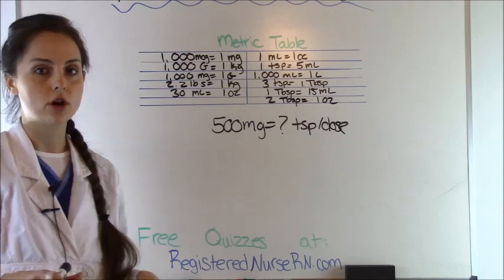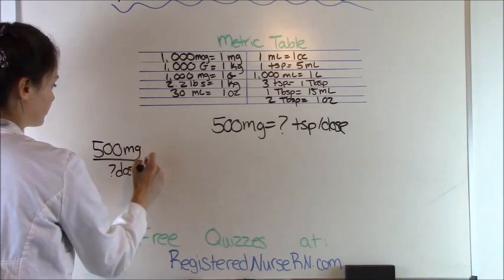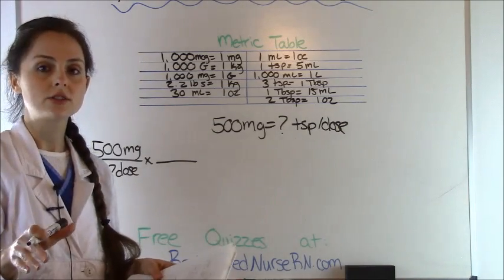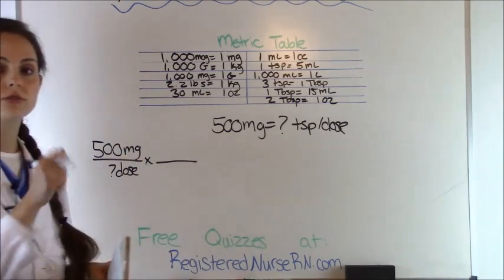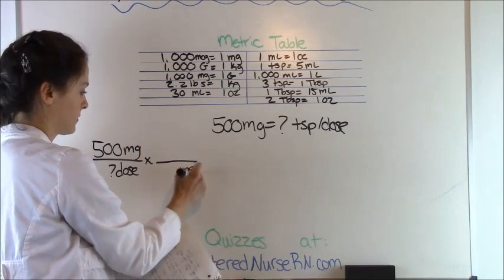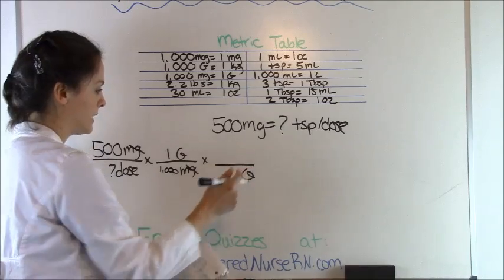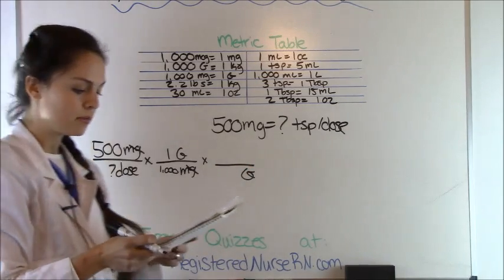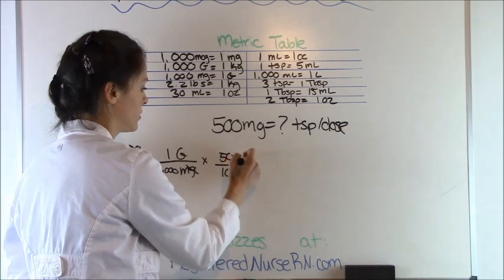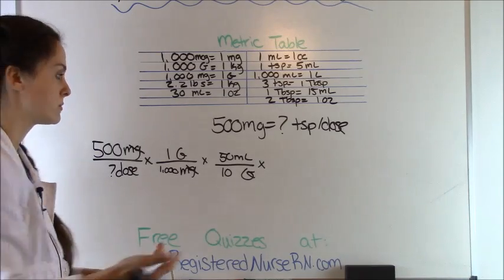Start with what the doctor ordered: 500 milligrams on top. We're dispensed in grams, so we need to convert — from the metric table, 1,000 milligrams equals one gram. So 1,000 milligrams goes on the bottom and one gram on top. Milligrams cancels out. Working diagonally, grams moves down. From the problem, 10 grams equals 50 milliliters — so 10 grams on the bottom and 50 milliliters on top. Grams cancels out. Normally we'd stop here since many problems ask for milliliters, but this one asks for teaspoons.